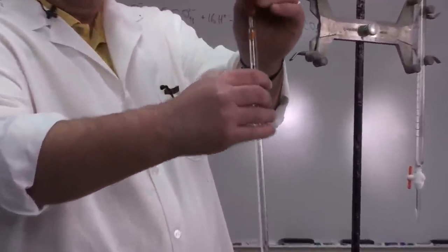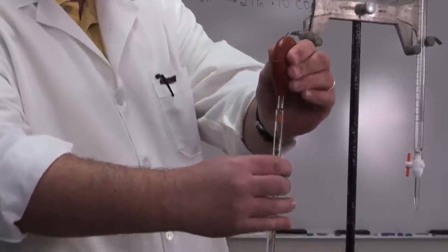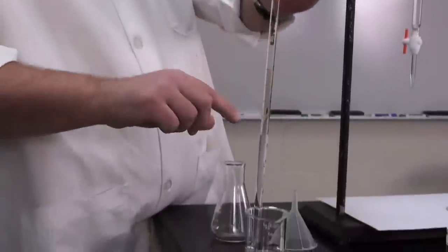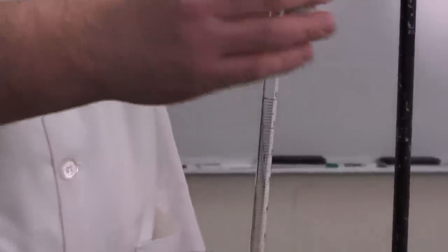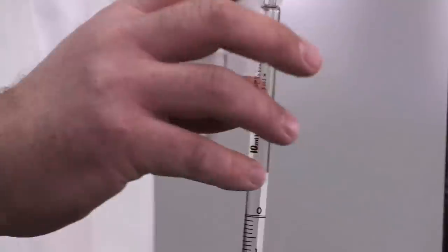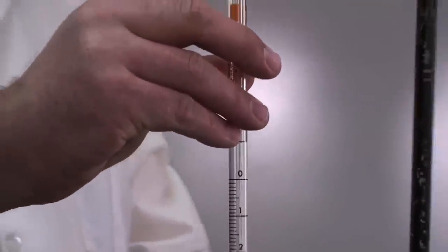That way if my pipette happens to be contaminated or I do something else silly, I've only contaminated this small amount and haven't contaminated my stock bottle. I'm going to put the bulb onto the pipette fairly lightly because I'm going to want to take it off quickly afterwards.